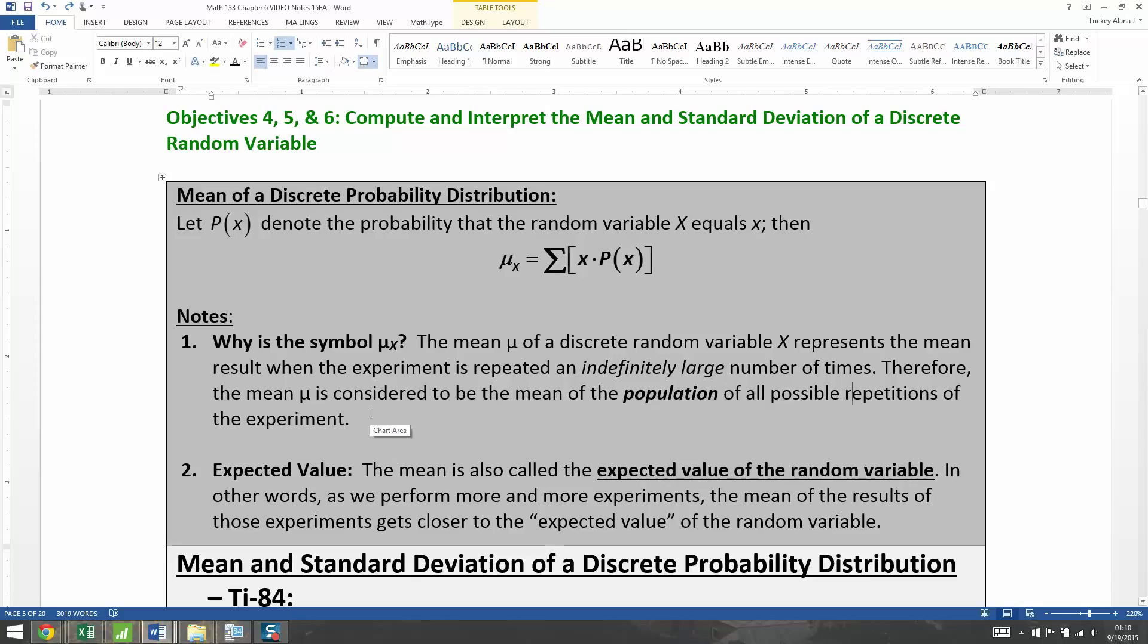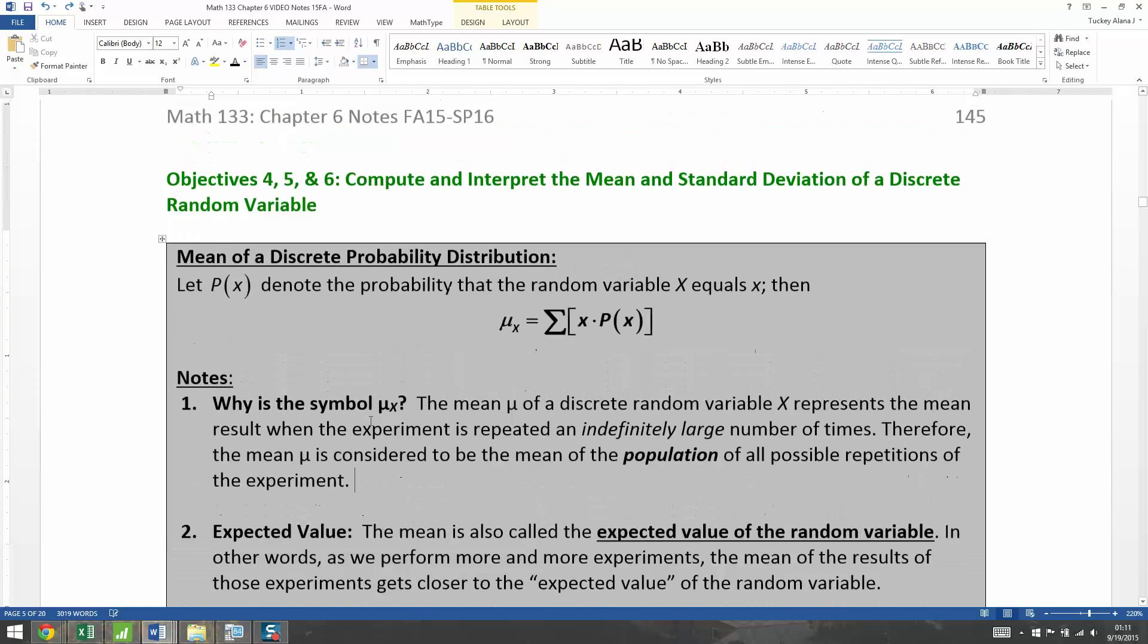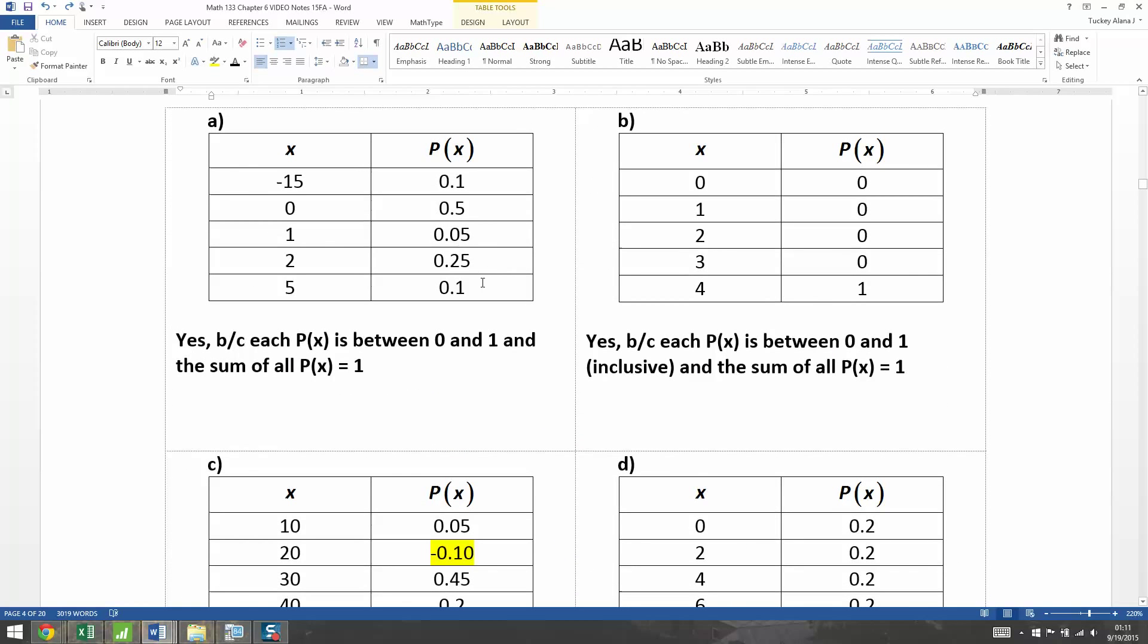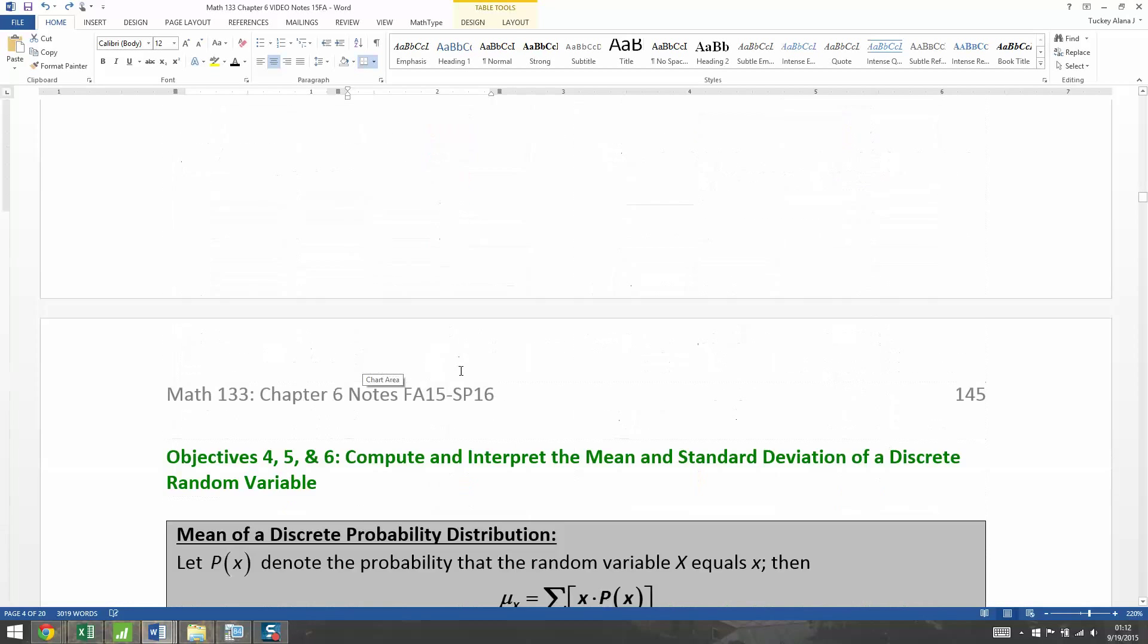When you're creating a probability distribution, what you're doing is accommodating for the entire population because the entire population has to fall in that distribution. Otherwise, it's not truly a probability distribution. That's why, for example, it sums to one at the end because you have every possibility accounted for. There are no other possibilities. So even if you did this experiment infinitely many times, these five results are all you'd ever get with these probabilities associated with them.